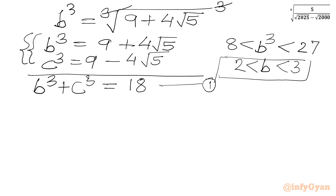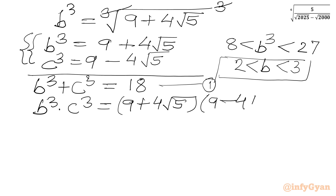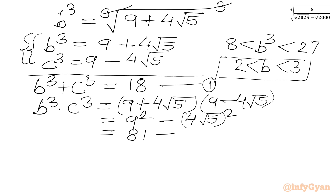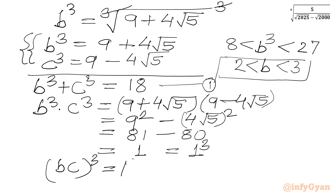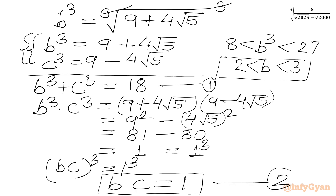Now we take the product: b cubed times c cubed equals (9 plus 4 root 5)(9 minus 4 root 5). Using difference of two squares, this is 9 squared minus (4 root 5) squared, equal to 81 minus 80, which is 1. So (bc) cubed equals 1 cubed, and taking cube roots gives bc equals 1. This is equation 2.